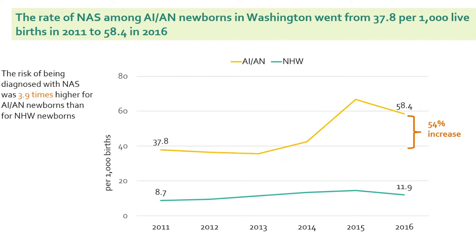Now looking at Washington state, using hospital discharge data also corrected for AIN racial misclassification, the rate of NAS among AIN newborns went from 37.8 to over 58 in 2016 — a 54% increase. The risk of being diagnosed with NAS for AIN newborns was 3.9 times that of non-Hispanic white newborns. This is also parallel to other multi-state studies showing that in Washington, the opioid use disorder rate found among newborns was higher than that in Oregon.